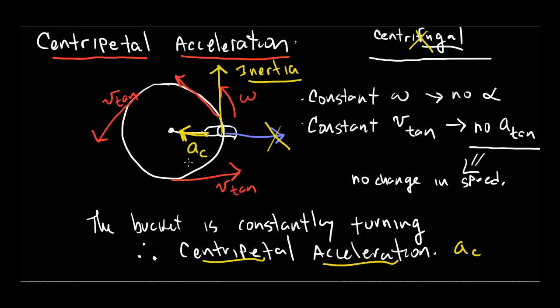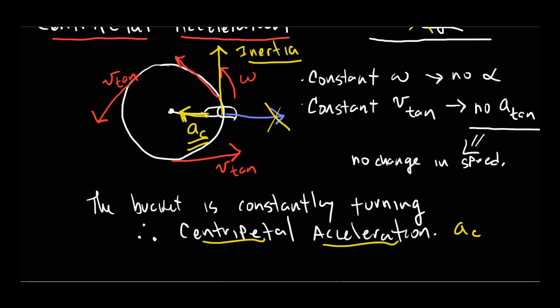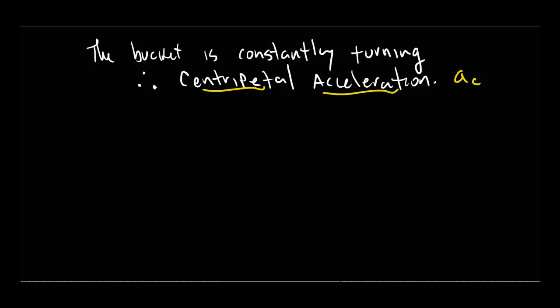The centripetal acceleration is related to two things: the speed of the object and the radius. The equation is: a_c equals the tangential speed squared divided by the radius — v_tan² / r. This makes sense: if the tangential speed is bigger, the direction changes faster, so acceleration is greater. If the radius is bigger, the direction changes more slowly, so acceleration is less.